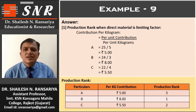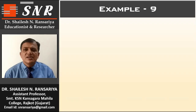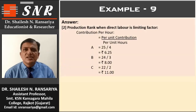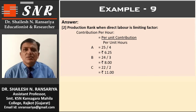Now we calculate contribution for the second limiting factor. Production rank when direct labor is the limiting factor. We calculate contribution per hour, which equals per unit contribution divided by per unit hours. Product A: 25 divided by 4 = Rs. 6.25. Product B: 24 divided by 3 = Rs. 8. Product C: 22 divided by 2 = Rs. 11.